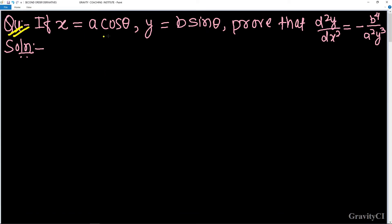Question: if x equals a·cos θ and y equals b·sin θ, prove that d²y/dx² equals minus b to the power 4 upon a squared y cubed.